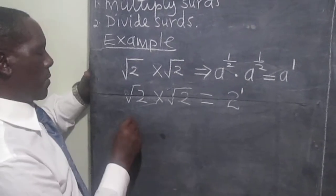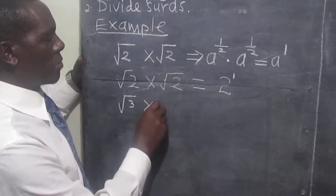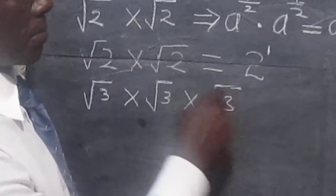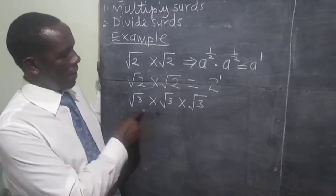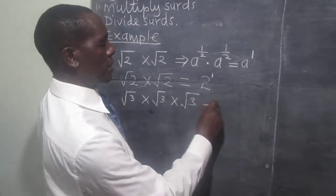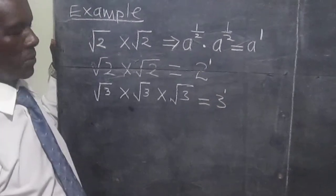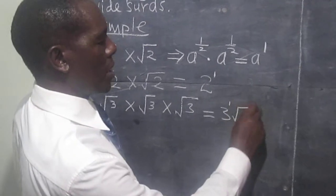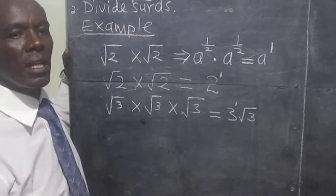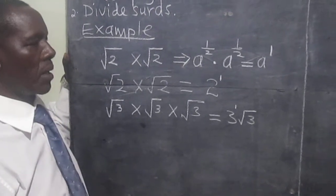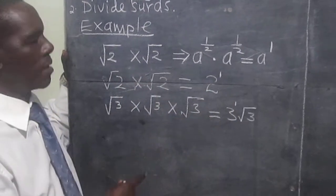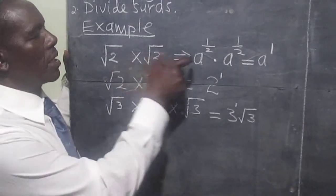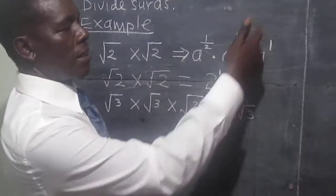One more example on that. Square root of three multiplied by square root of three multiplied by square root of three. The first two will give us three power one, and then we will still remain with root three. And therefore, the product will be three root three. So that is when we multiply a third by itself two times or three times — every two will give us power one.